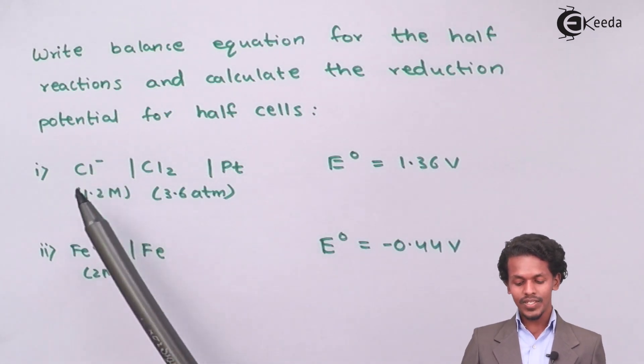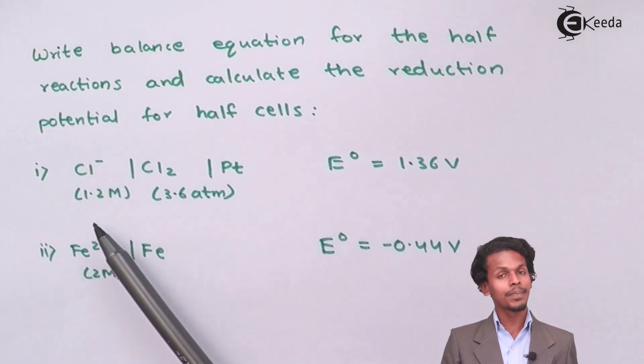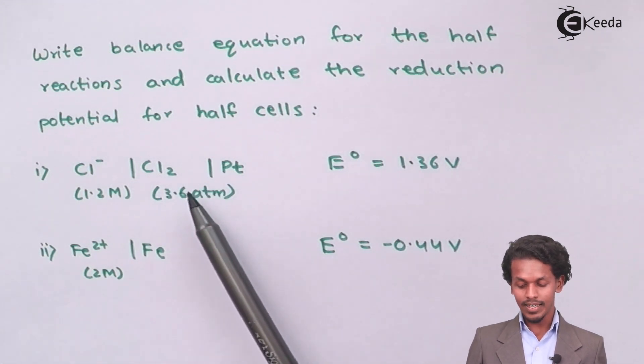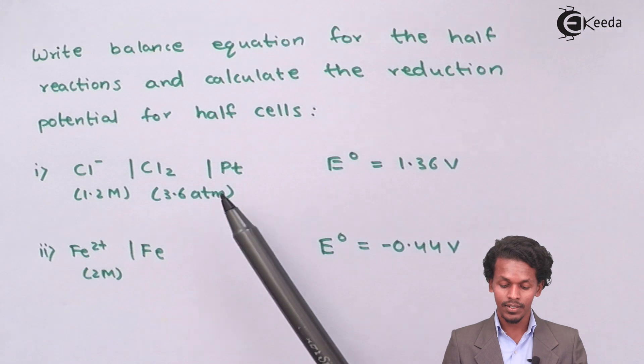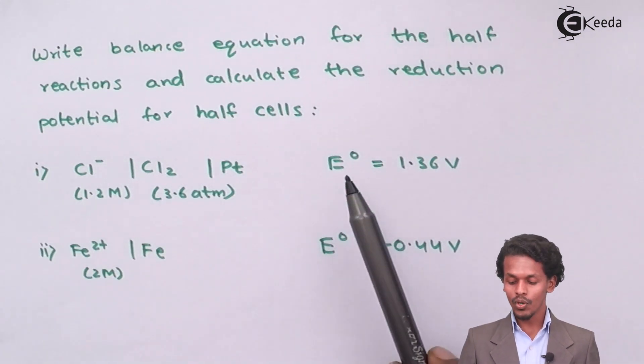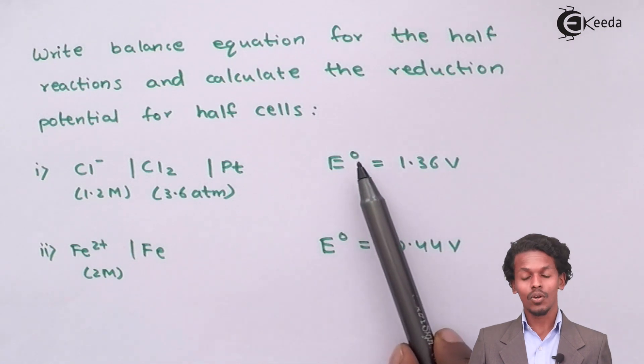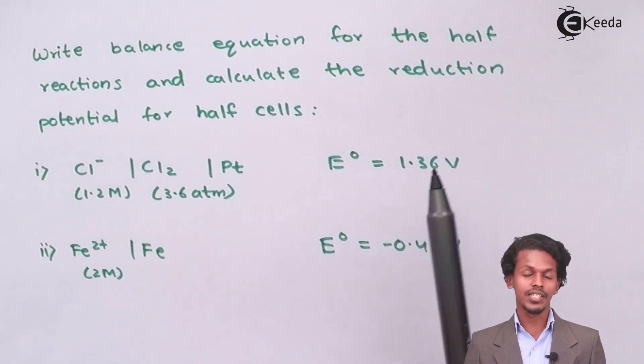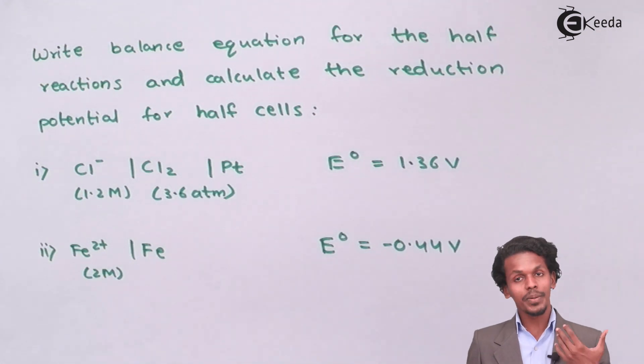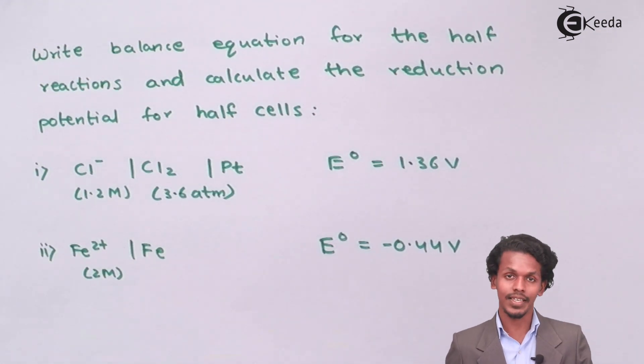The first question is Cl- which has a concentration of 1.2 molar which is giving us 3.6 atmosphere of Cl2 in molecular form and the E0 value is given as 1.36V. We have to calculate the cell potential or reduction potential in this case.